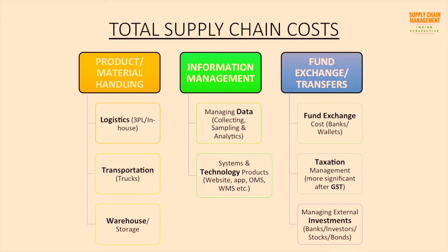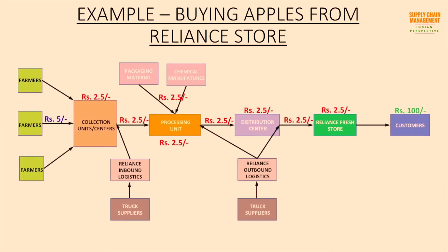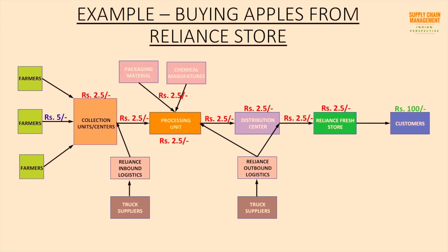Now let's look at the example of a Reliance Fresh Store. A customer comes to purchase 1 kg of apples available at a retail price of rupees 100 per kg. The costs involved during different stages to deliver the apples at the store are shown, all on a per kg of apple basis. Starting from rupees 5 for transporting fresh produce to collection centers, followed by rupees 2.5 spent in managing the collection centers. All other costs involved are written on the respective stages.